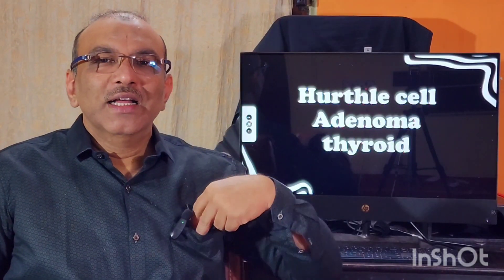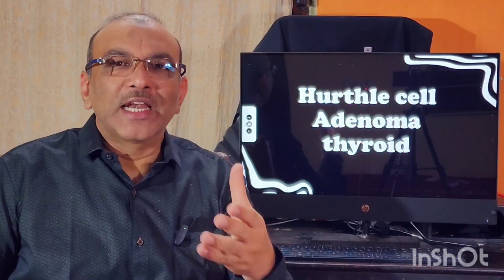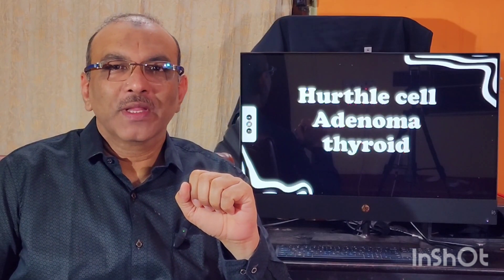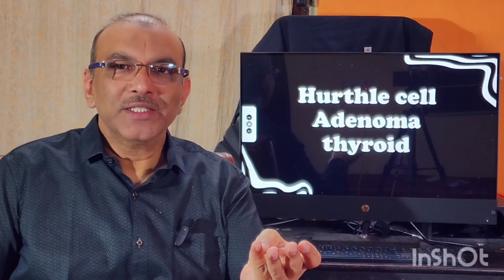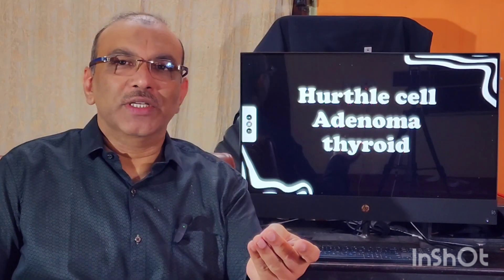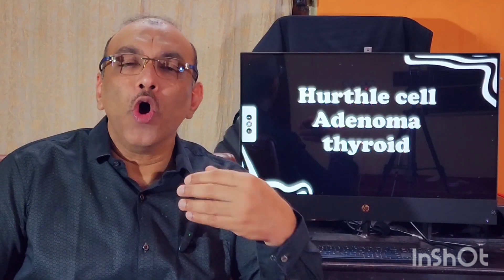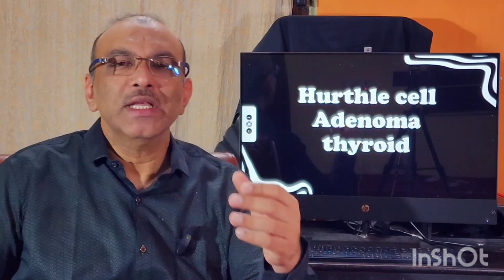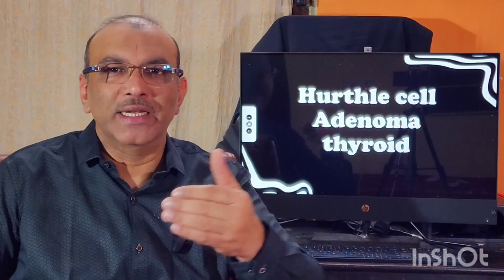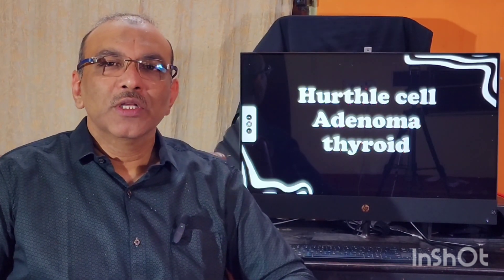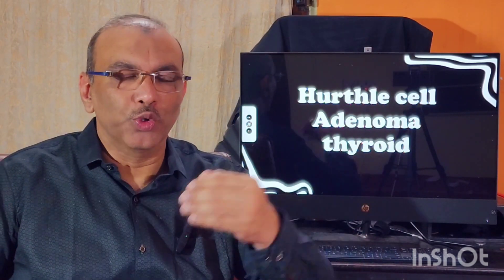There are many different diseases related to the thyroid gland — it can be thyroiditis, benign conditions, or malignant conditions. Malignant means dangerous; benign means it will not trouble the patient for a long period, but in a small percentage of patients it can suddenly turn into malignancy. Hurthle cell adenoma comes under the benign group.